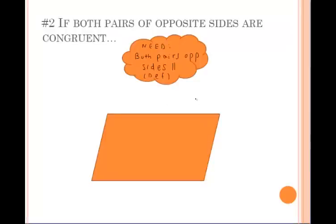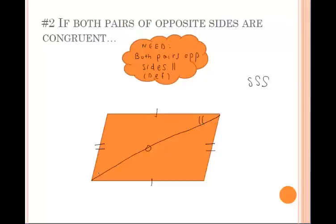Let's talk about why number two works. If we're given both pairs of opposite sides congruent, we have a parallelogram, but by definition we need both pairs of opposite sides to be parallel. If we draw in a diagonal and use the reflexive property on that side, we get two triangles congruent by SSS. Then we can say those angle pairs are congruent by CPCTC — both are alternate interior angles, and if those are congruent we get parallel lines, which ultimately gives us both pairs of opposite sides parallel.